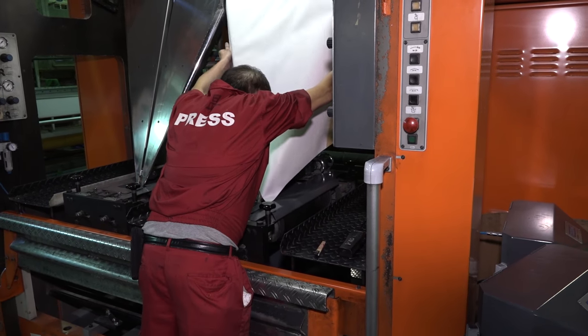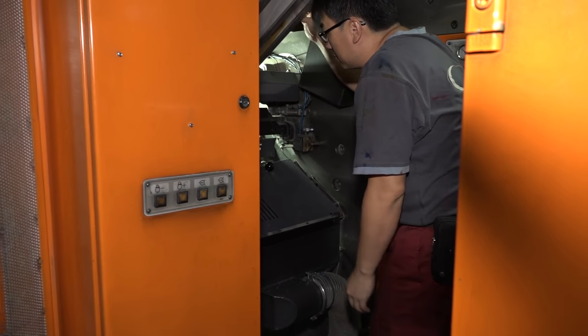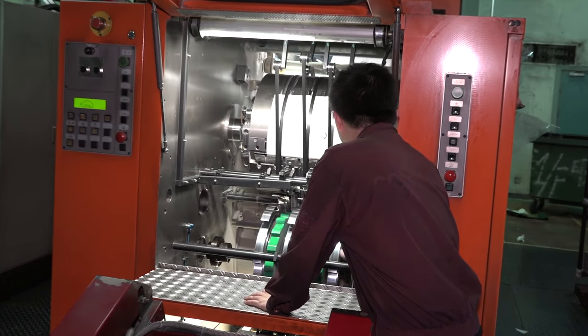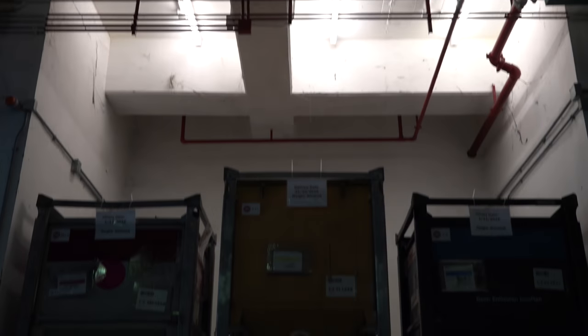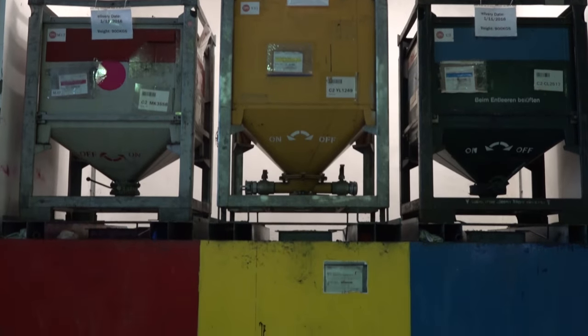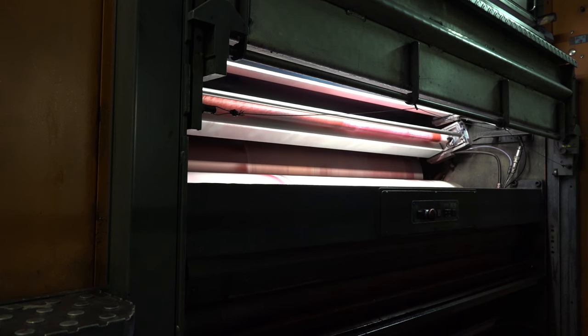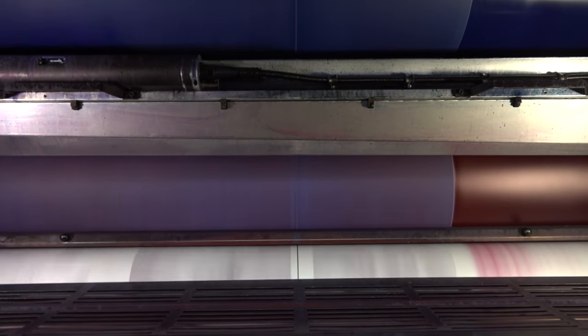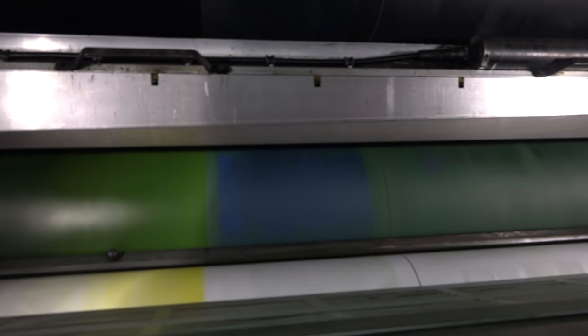Once the paper is in place and the plates are in place, the press is started. The ink is kept in large vats found outside the factory. The rollers pick up ink according to the different colored plates. They transfer the ink to a blanket which is pressed against the paper giving us a printed page.